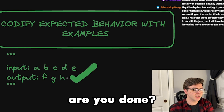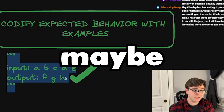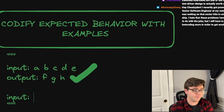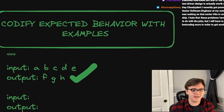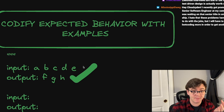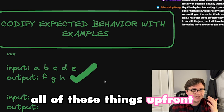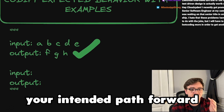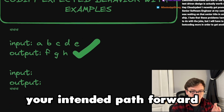Now, are you done? Maybe. Think about edge cases. What if null comes in? What if I get no input? Then do I return nothing back? Confirm the expected behavior for all of these things up front, because they might affect your intended path forward.